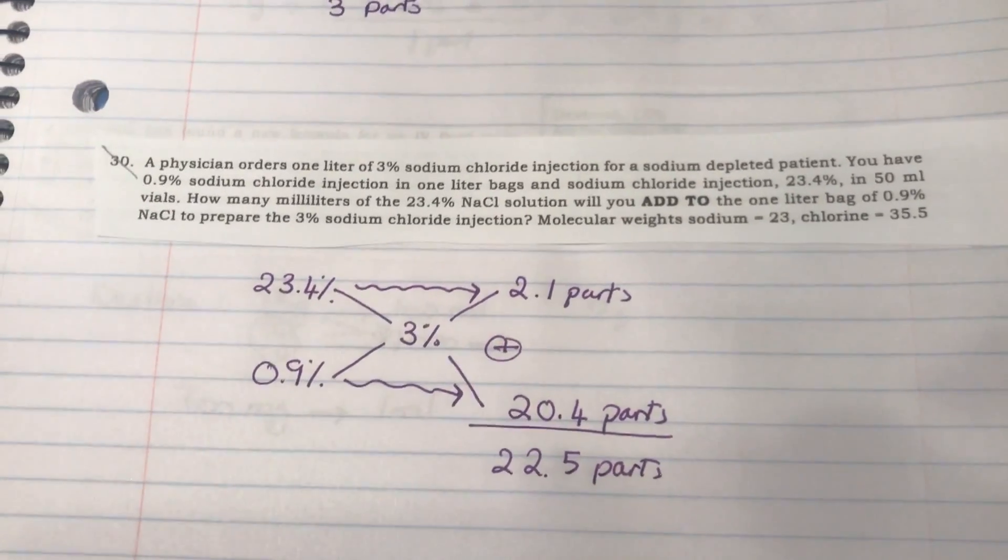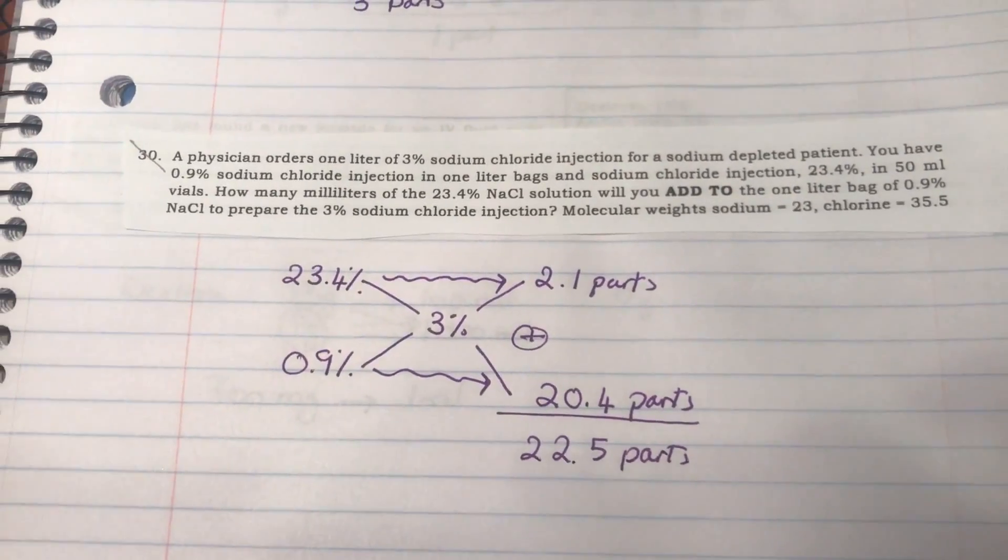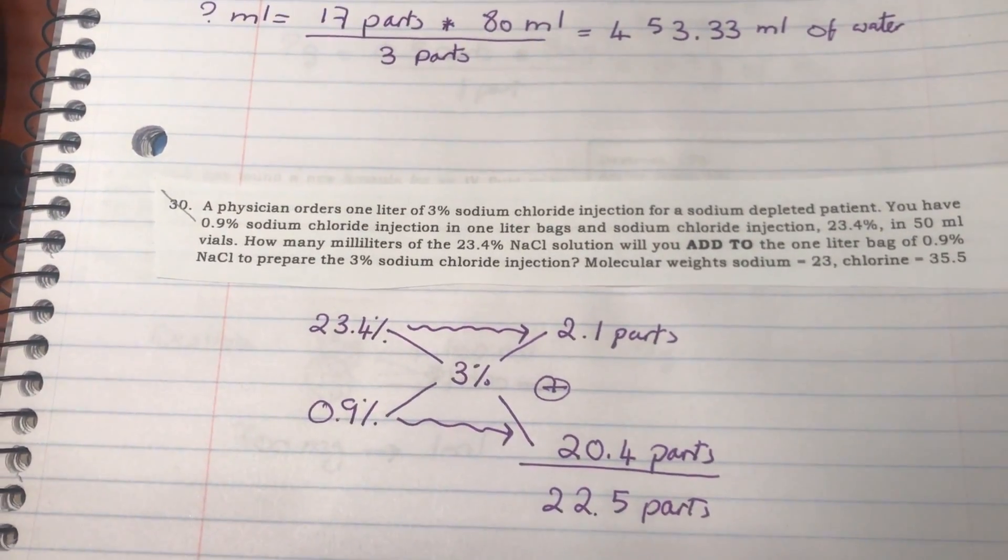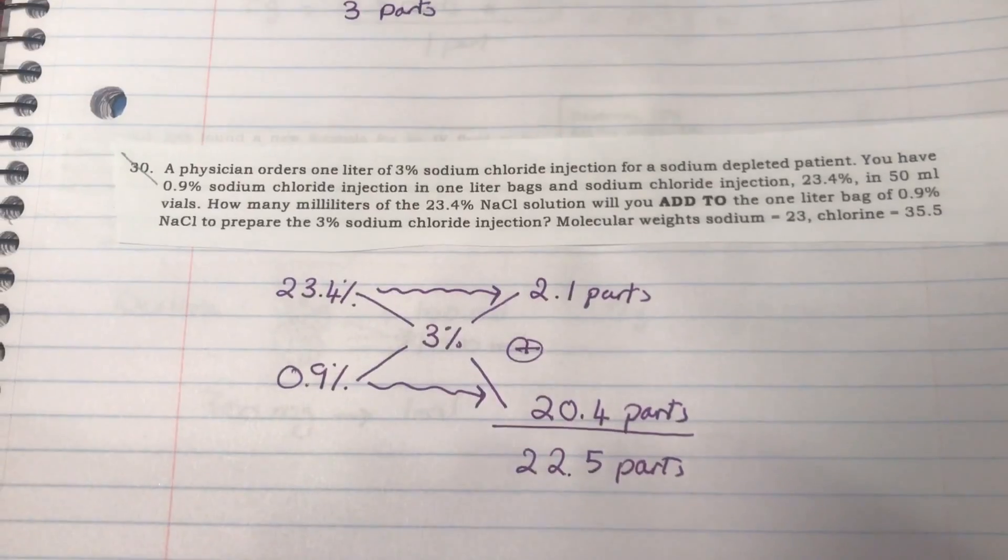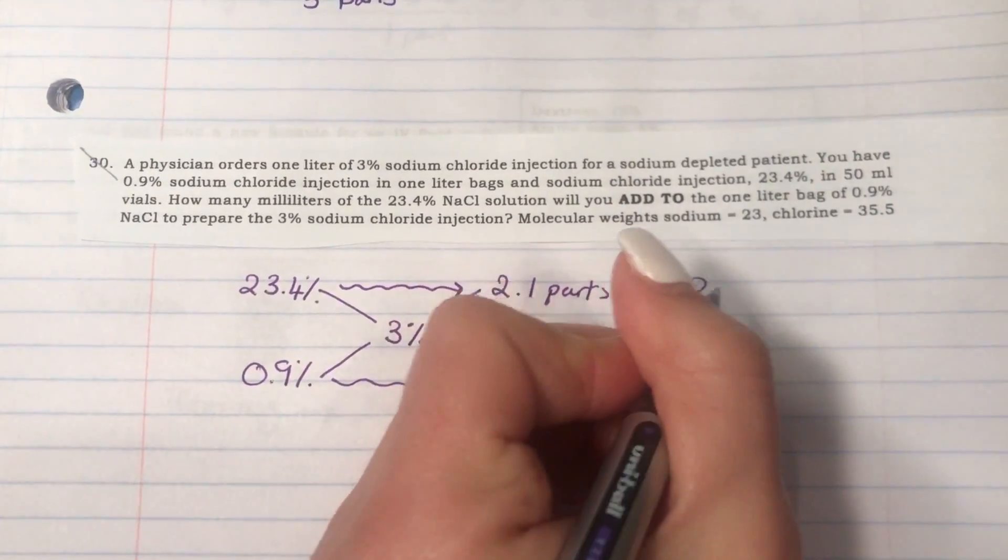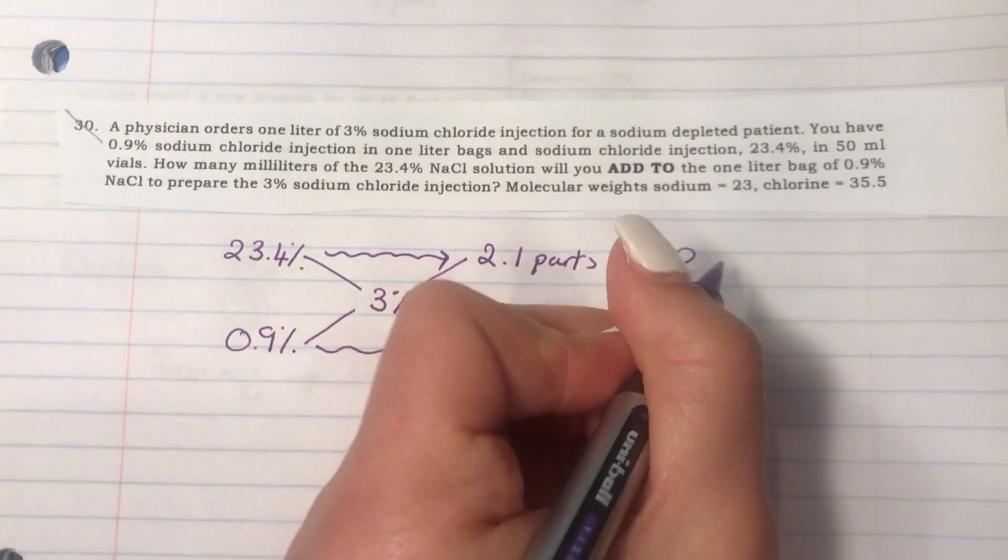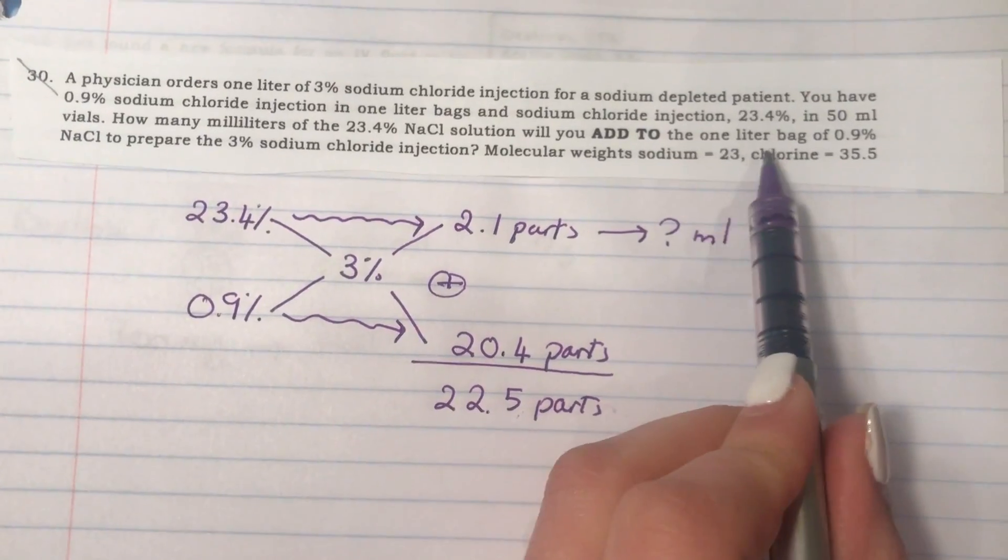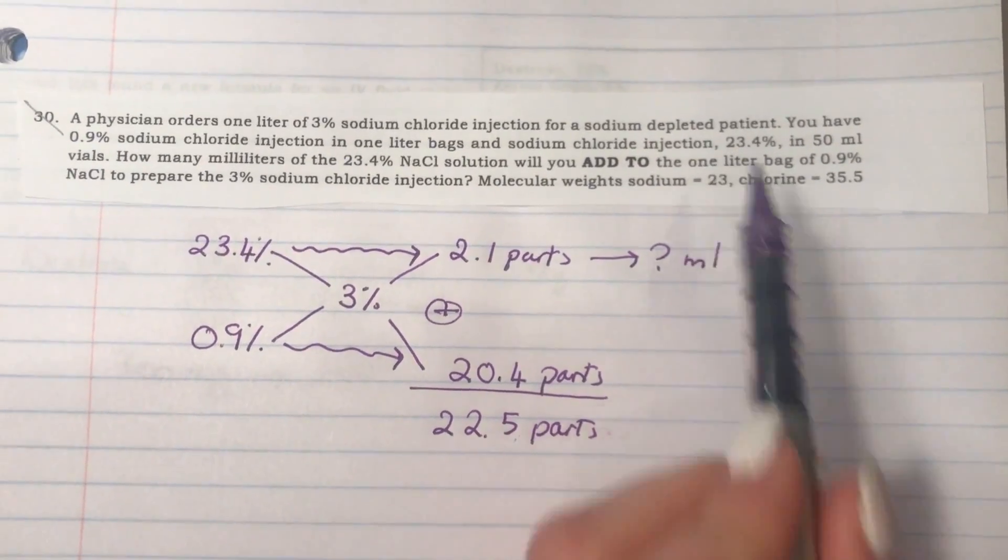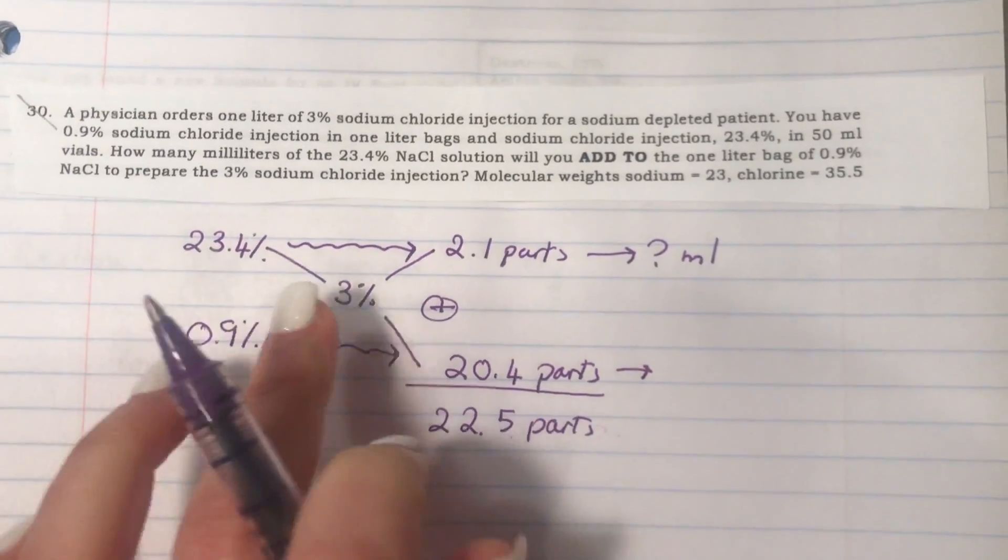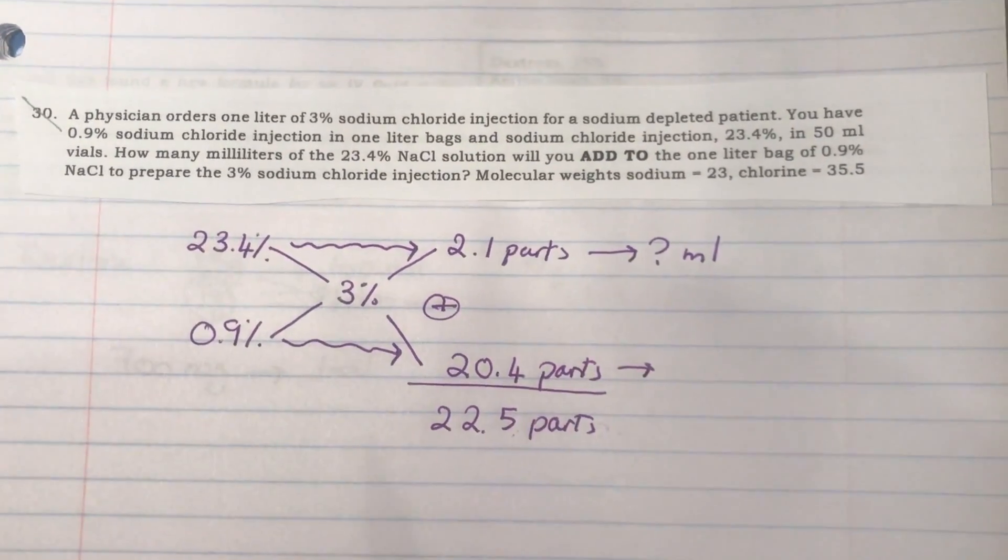Now that you have this all set up, we'll go back and read what is required. You are required to calculate the milliliters of the 23.4% that you need to add to the normal saline. You already have the amount of normal saline given here. The amount of normal saline that you're going to add the 23.4% to is one liter.